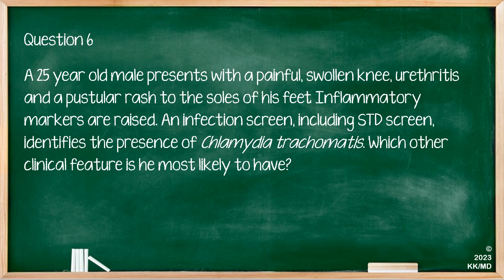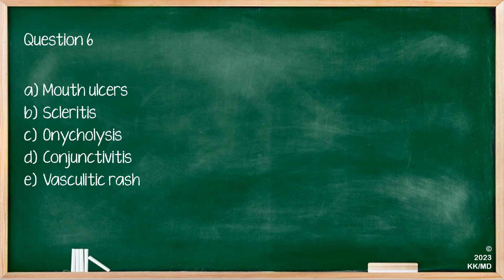Question six: a 25-year-old male presents with a painful swollen knee, urethritis, and a pustular rash to the soles of his feet. Inflammatory markers are raised and an infection screen, including an STD screen, identifies chlamydia trachomatis. Which other clinical feature is he most likely to have? This is a diagnosis of reactive arthritis, specifically Reiter's syndrome. The pustular rash to his feet is keratoderma blennorrhagicum. The correct answer is conjunctivitis, as part of the triad of Reiter's syndrome: conjunctivitis, arthritis, and urethritis.